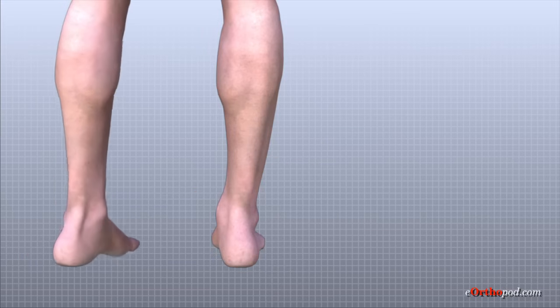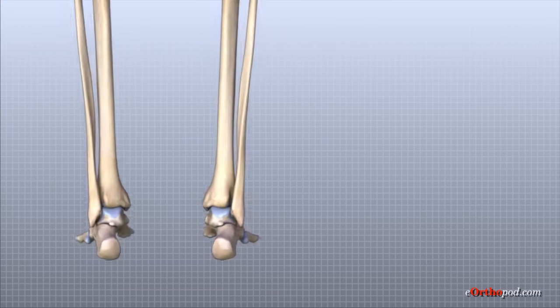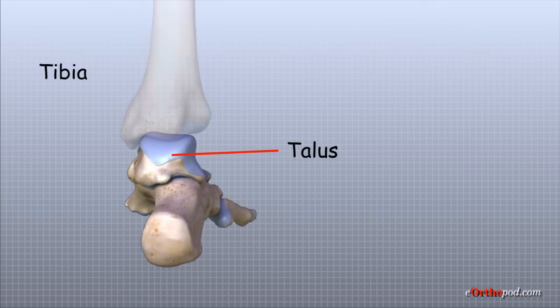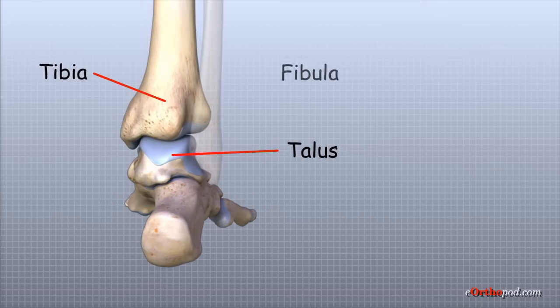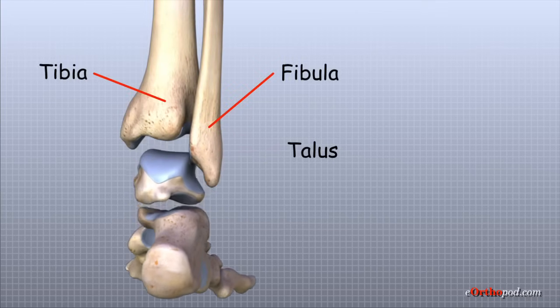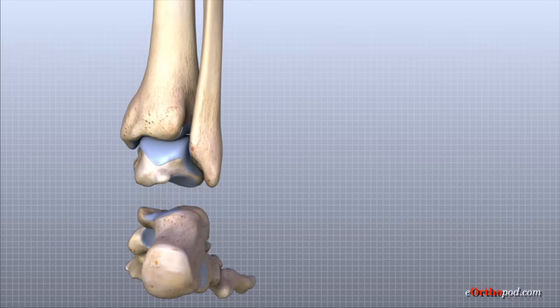The ankle joint is formed by the connection of three bones: the talus, the tibia, and the fibula. The top of the talus fits inside a socket that is formed by the lower ends of the tibia and the fibula.